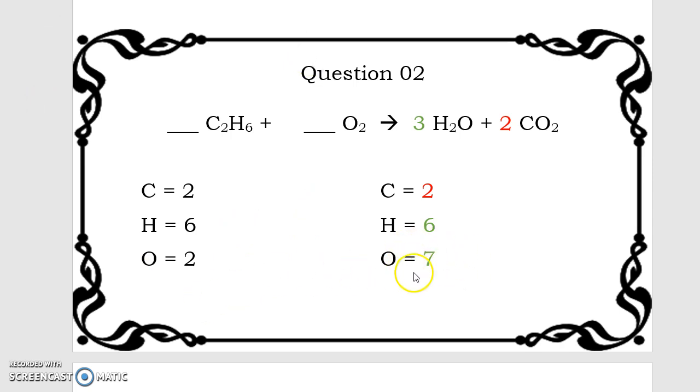Normally, when we get to this point in our equation that we have gone through all of our elements, we have a balanced equation. Some of our questions, however, are going to be a little bit trickier. For example, in this case, we have two carbons, six hydrogens, and two and seven oxygens. So we're not balanced yet.